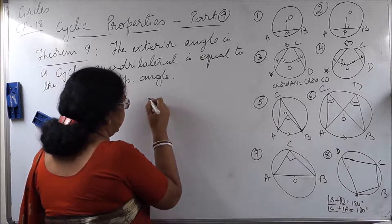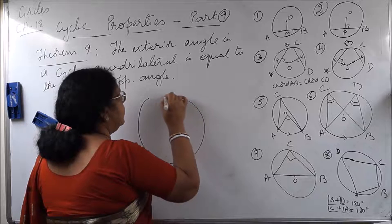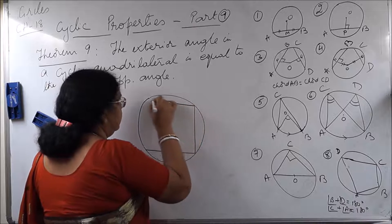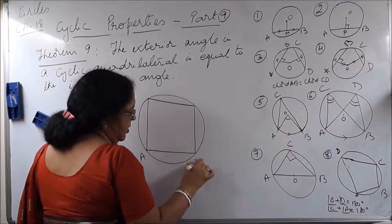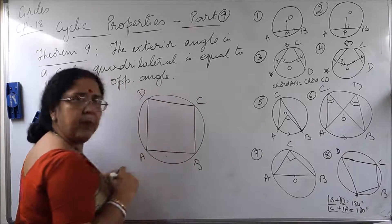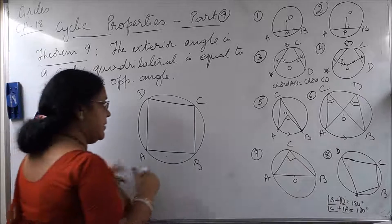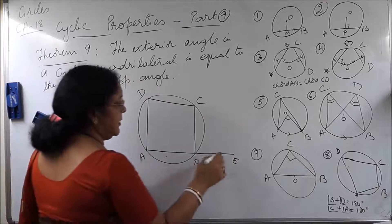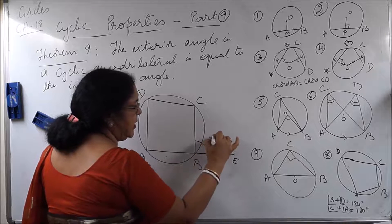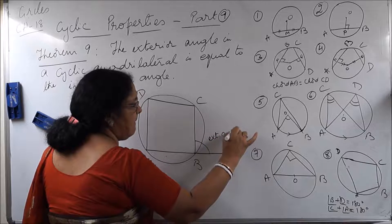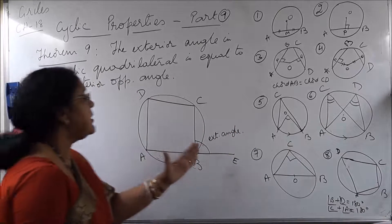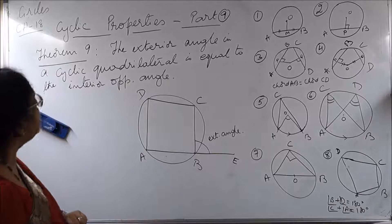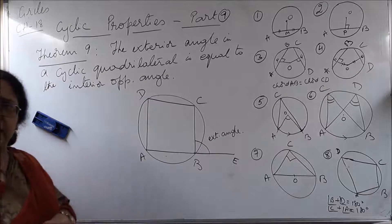Now let us consider a cyclic quadrilateral ABCD. The exterior angle is found by producing any one side. So let us produce side AB to E. Now this angle — that is, angle BCE — is the exterior angle. According to this theorem, this exterior angle is equal to the interior opposite angle. Let us verify whether it is true or not.